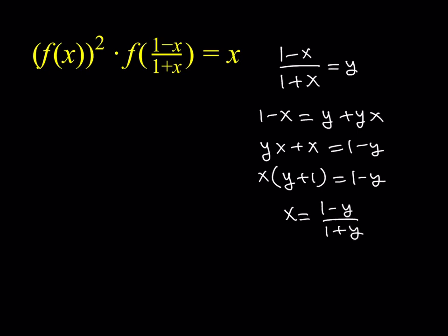What is that supposed to tell us? When I solve for x in terms of y, this is f inverse of y. So f inverse of y equals (1 minus y) over (1 plus y). If you go ahead and replace x and y — switch them around — you get f inverse of x equals (1 minus x) over (1 plus x). Wow, f is a very special function because its inverse equals itself. It means that if you replace x with its inverse, you get the identity function, f of x equals x.